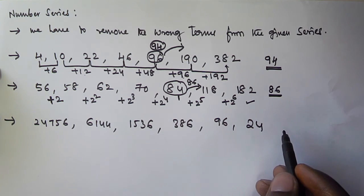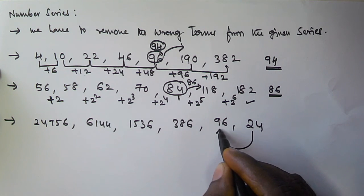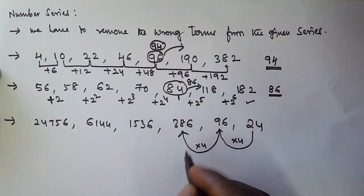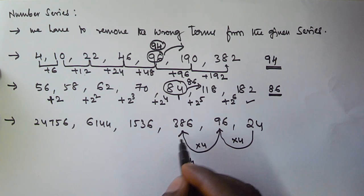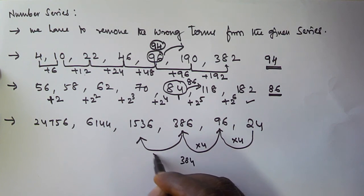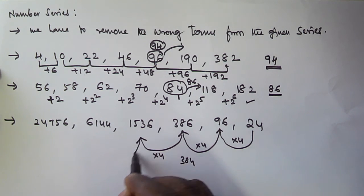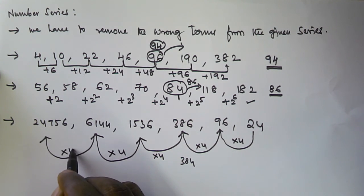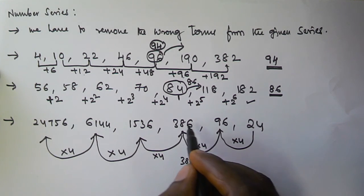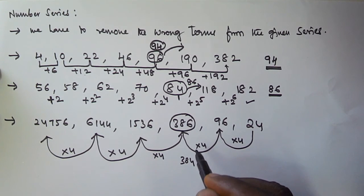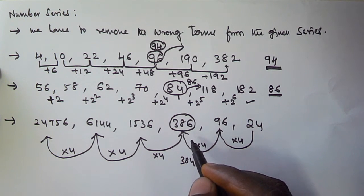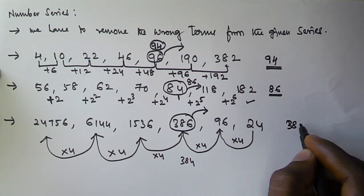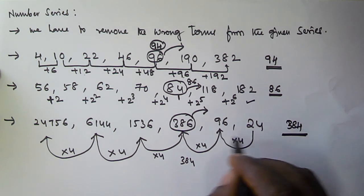For the third problem, working from the right: 24 multiplied by 4 is 96, and 96 multiplied by 4 is 384 — but we have 386. Continuing: 384 multiplied by 4 is 1536, 1536 multiplied by 4 is 6144, and 6144 multiplied by 4 is 24756. So the wrong term is 386, and we have to replace it with 384.